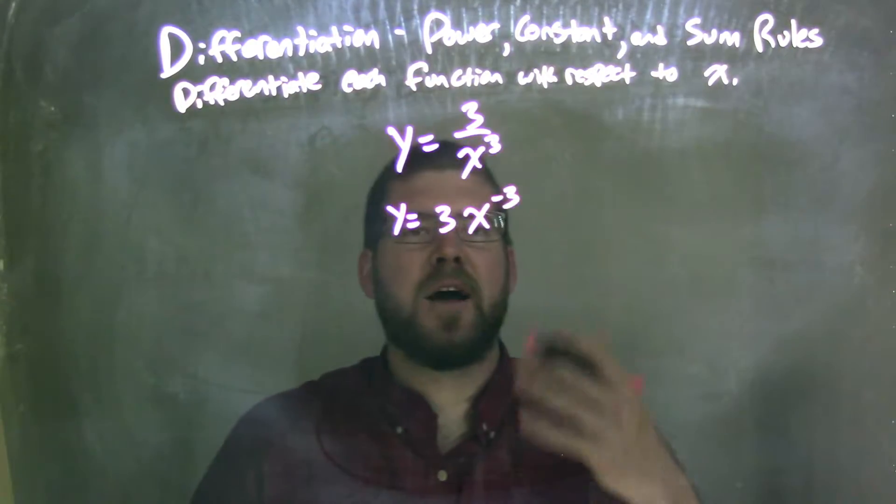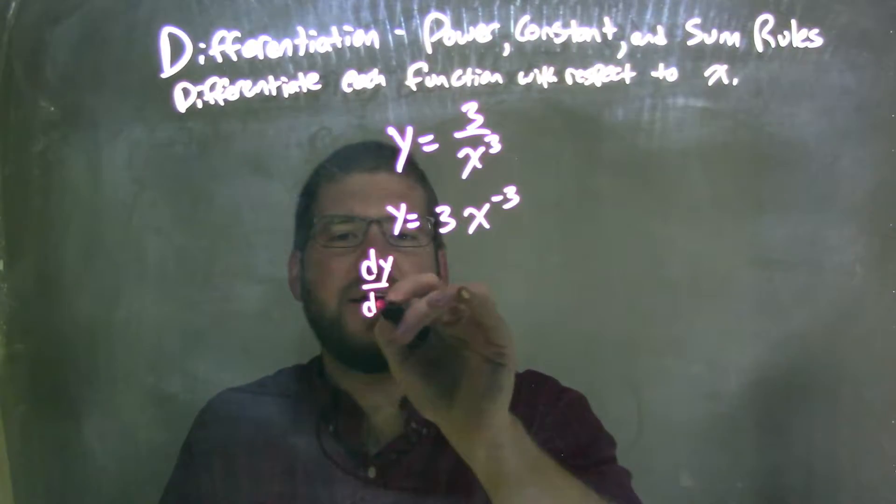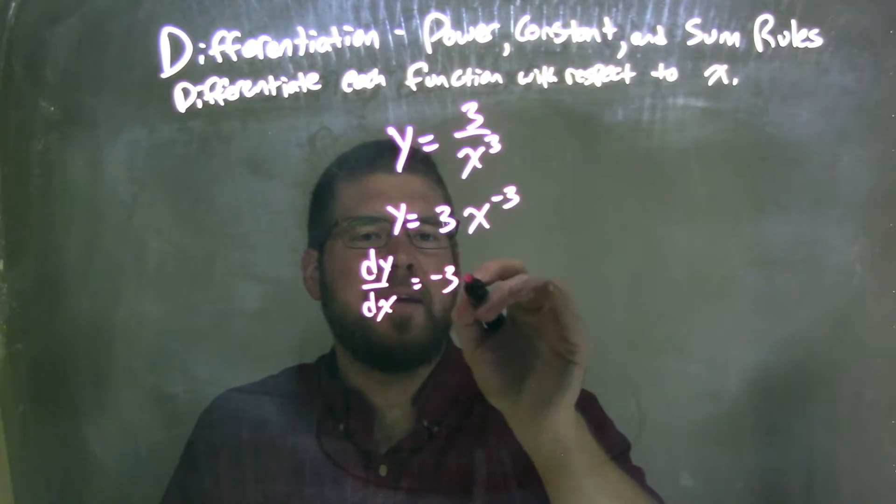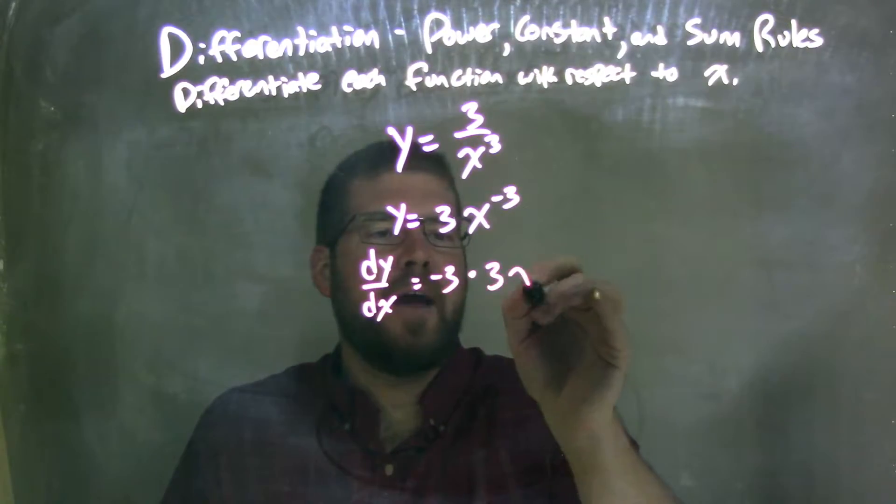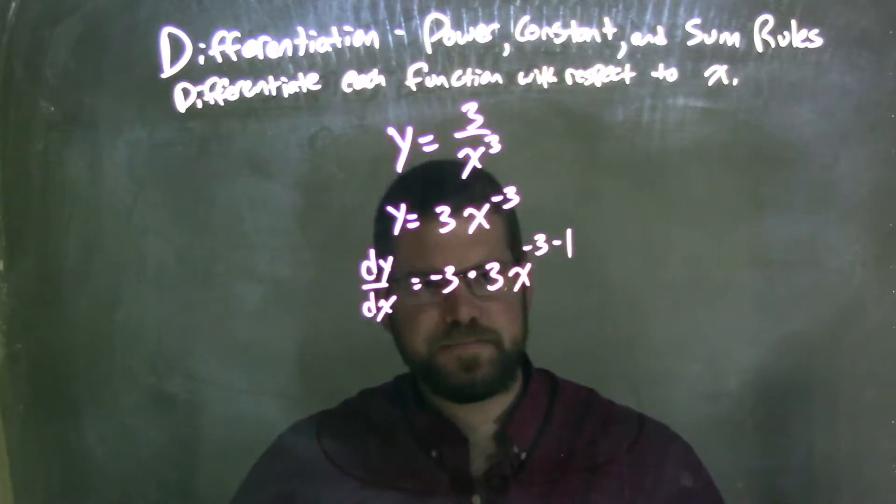But what that allows me to do now is, it's easier for me to see the power rule here. So now I take my derivative, dy/dx. The power comes out front, negative 3 times 3x to the negative 3, and we subtract that exponent by 1, negative 3 minus 1, okay?